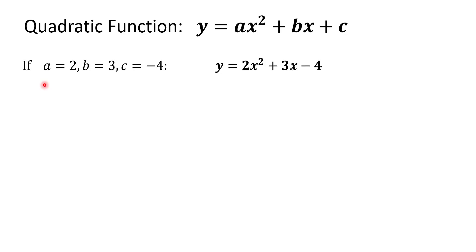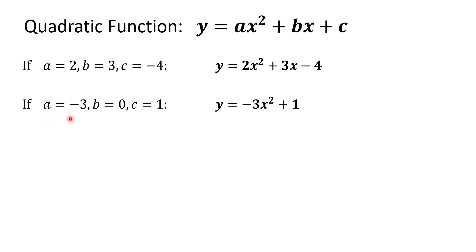For example, if we let a equal 2, b equal 3, and c equal negative 4, then the quadratic function we obtain is y equals 2x squared plus 3x minus 4. If we let a equal negative 3, b equals 0, and c equal 1, then we produce y equals negative 3x squared plus 1. Since b equals 0, and 0 times x is 0, this quadratic function does not have a middle term.